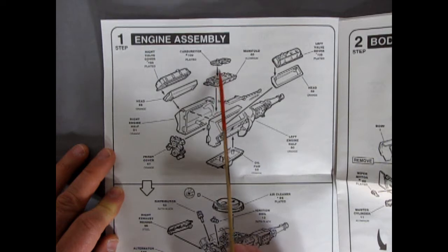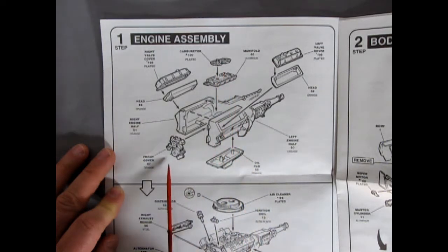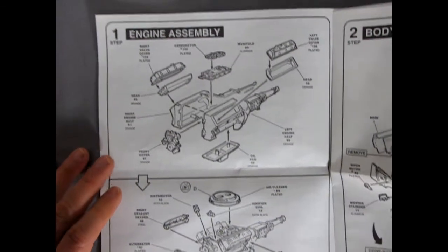There's our manifold. And the carburetors going on the top of that, as well as our front engine cover and our oil pan. And they're saying to paint them orange, which should be of course Hemi engine orange. And then panel two.